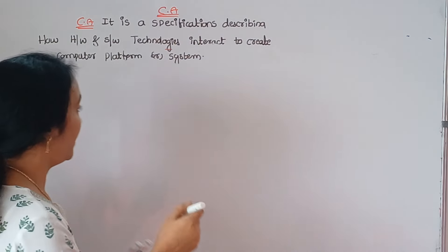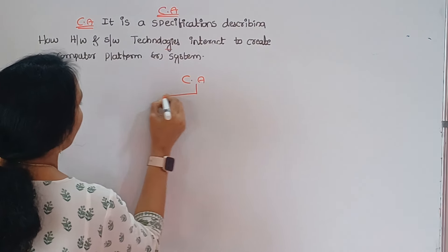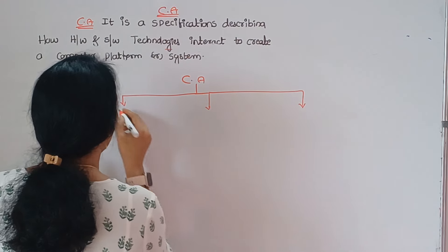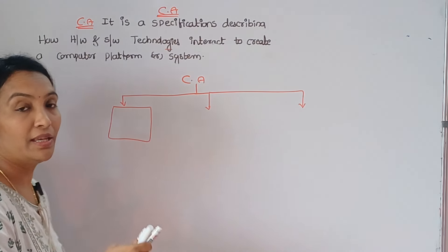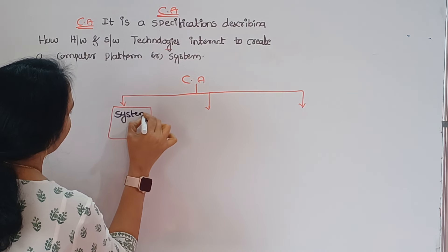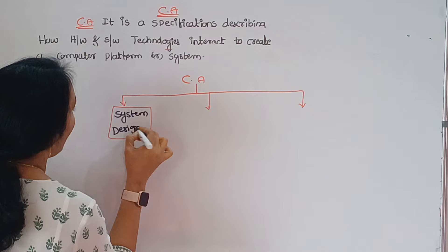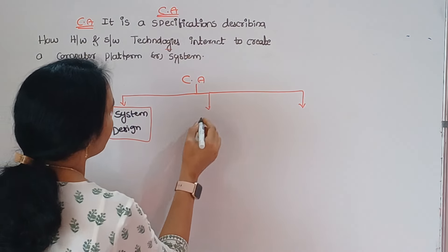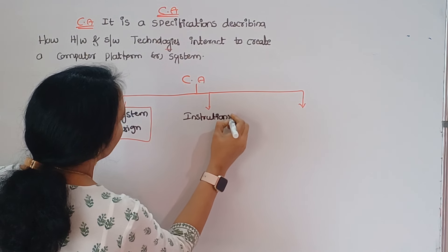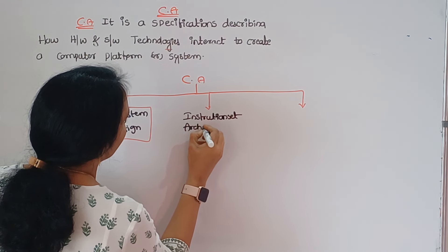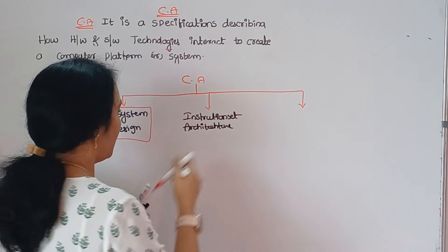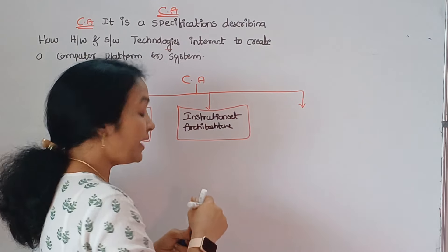This computer architecture means that we divide into three categories. First one is System Design. And next one is Instruction Set Architecture. And the very important one is Micro Architecture.